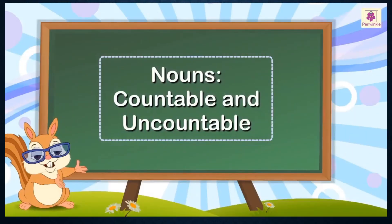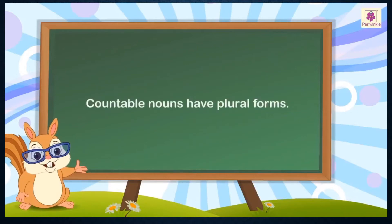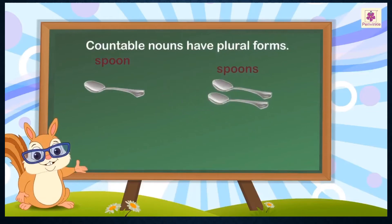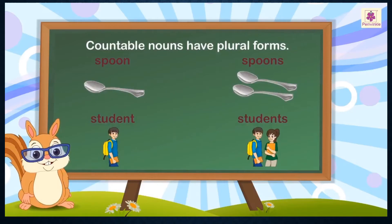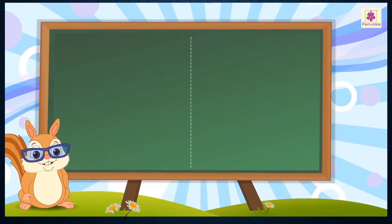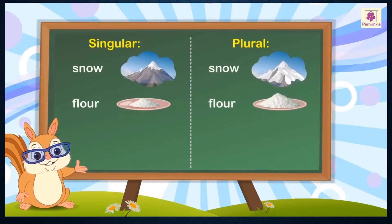Nouns — countable and uncountable. Countable nouns have plural forms. Uncountable nouns do not have plural forms. For example: snow, flour, jam.